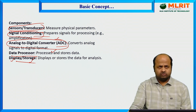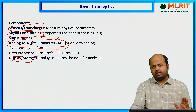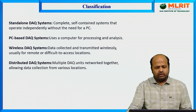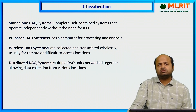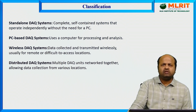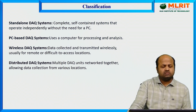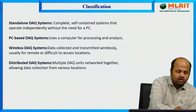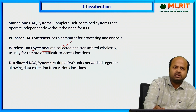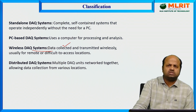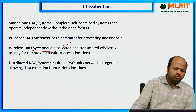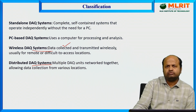Now, what are the different types of data acquisition systems? We have: standalone data acquisition systems, PC-based data acquisition systems, wireless data acquisition systems — where data can be collected and transmitted wirelessly — and distributed data acquisition systems, where multiple data acquisition system units are connected to each other to cover a large area.